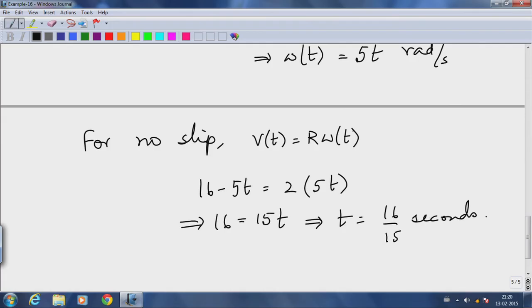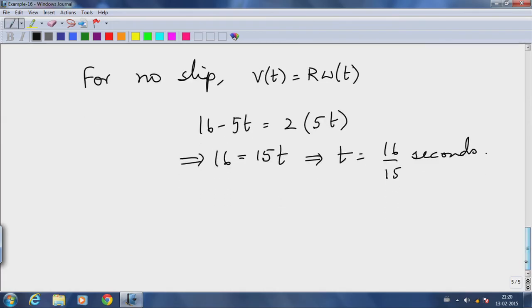So until this time instant the hoop would be slipping at the point of contact. What would be interesting is to draw the friction force as a function of time. So F_max is 32 newtons.